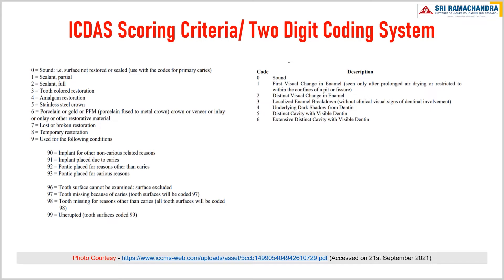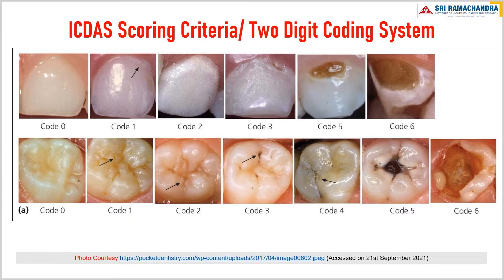The second digit coding system: score 0 is a sound tooth surface. Score 1 is the first visual change in the enamel, seen only after prolonged drying or restricted to within the confines of a pit or fissure. Code 2 is a distinct visual change in the enamel. Code 3 is localized enamel breakdown without clinical or visual signs of dentinal involvement. Code 4 is underlying dark shadow from dentin. Code 5 is distinct cavity with visible dentin. Code 6 is extensive distinct cavity with visible dentin.